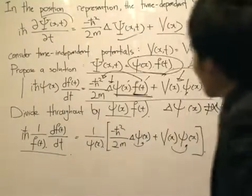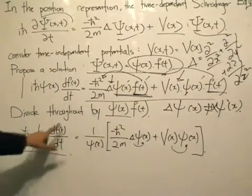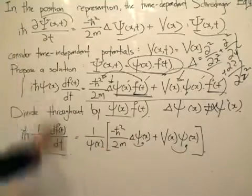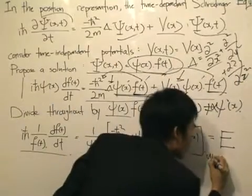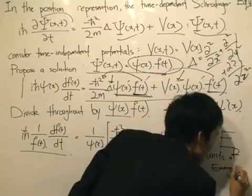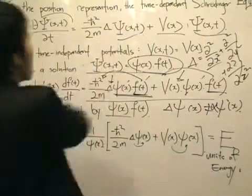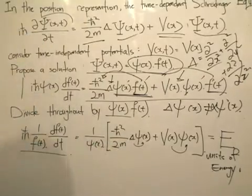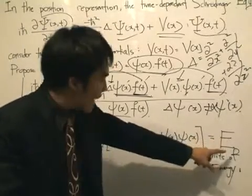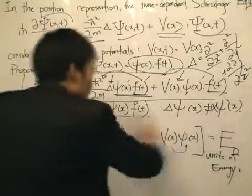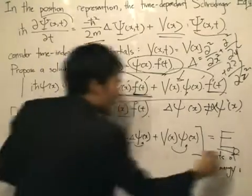What we notice is that the left-hand side is an expression purely in terms of t, and the right-hand side is an expression purely in terms of x, and both are equal. Therefore both sides must equal a constant, which we label E — and this has the units of energy. Why? Postulate number two: for every operator there is an associated observable. We started with the Hamiltonian, and when the Hamiltonian is applied to the wave function it gives us the energy. So the constant E is the energy. We then solve each side separately, pairing each with the constant E.